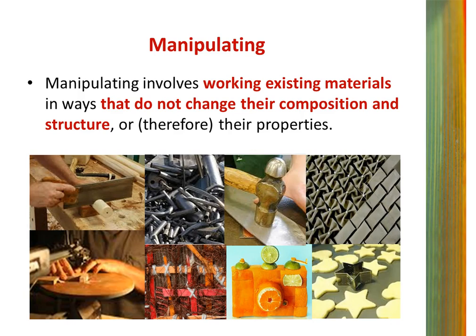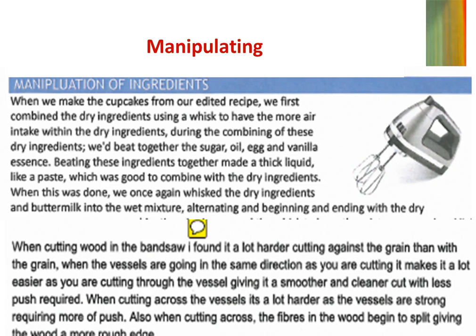Plywood is made by laminating timbers. This process is achieved by gluing the timbers together. Manipulation involves working existing materials in ways that do not change their composition and structure and therefore their properties. Manipulation can involve, for example, changing the shape of a material or joining different materials together. Cutting, moulding and folding are examples of manipulative operations.